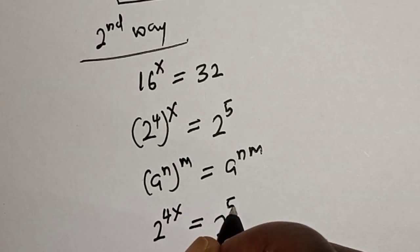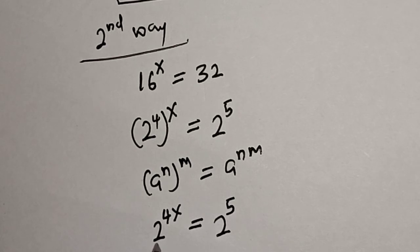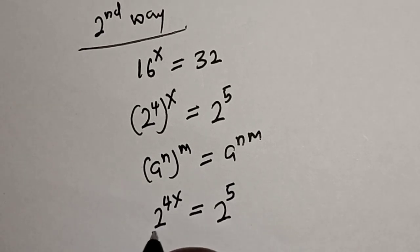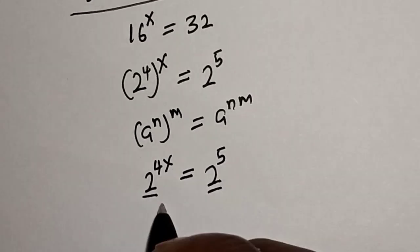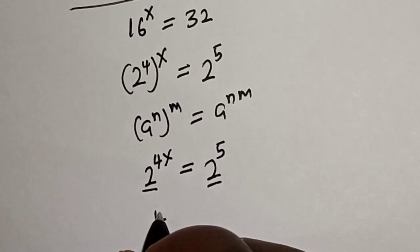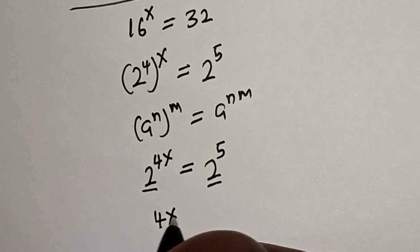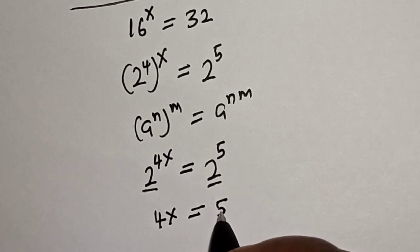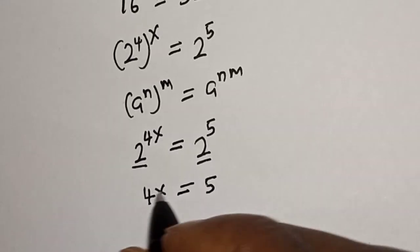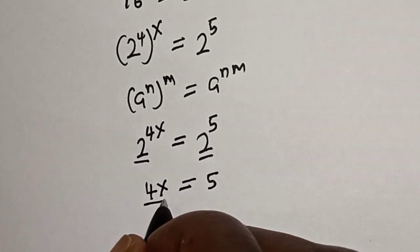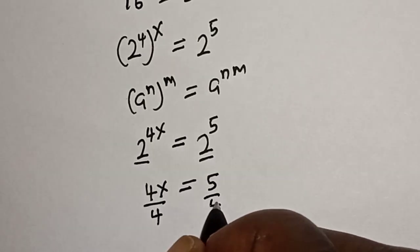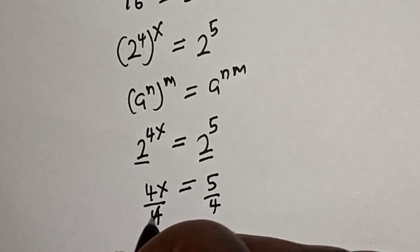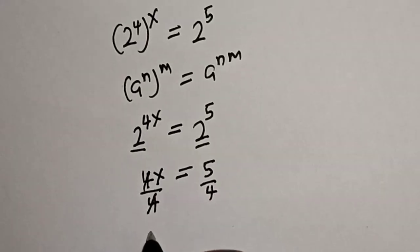Since they have the same base 2, we can equate the exponents: 4s is equal to 5. Dividing both sides by 4, s is equal to 5 over 4 — that is our final answer.